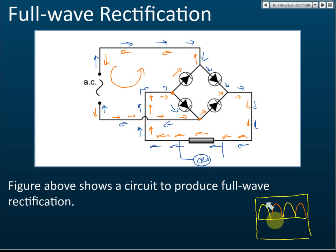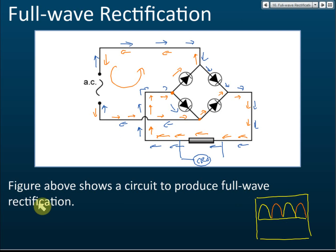Because the current always moves in the same direction through the resistor, the bridge rectifier successfully converts alternating current to direct current. There is no current lost in the process — unlike half-wave rectification where 50% of the energy is lost. Here, 100% of the current remains in the circuit. This is called full wave rectification.